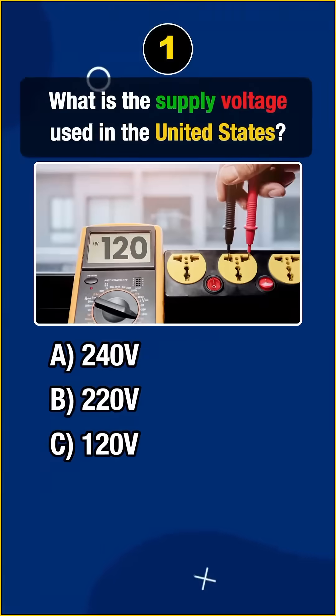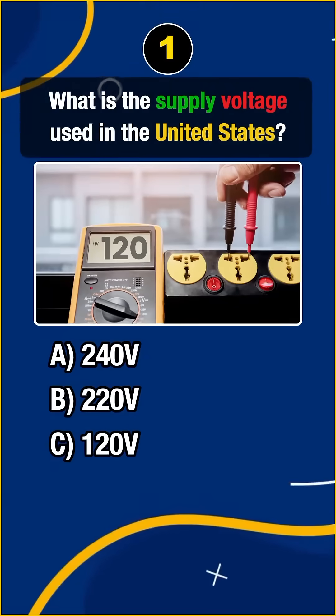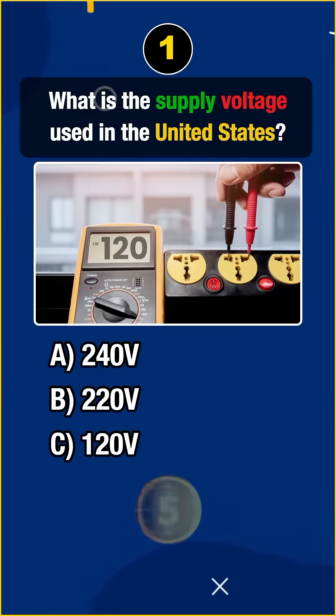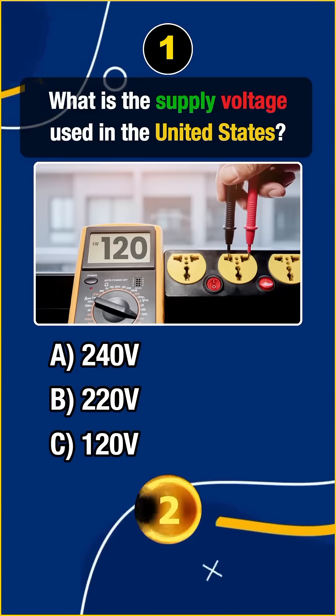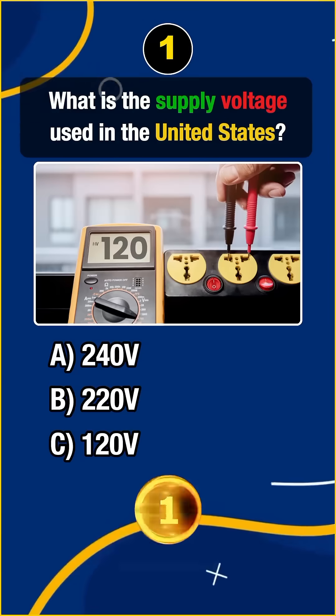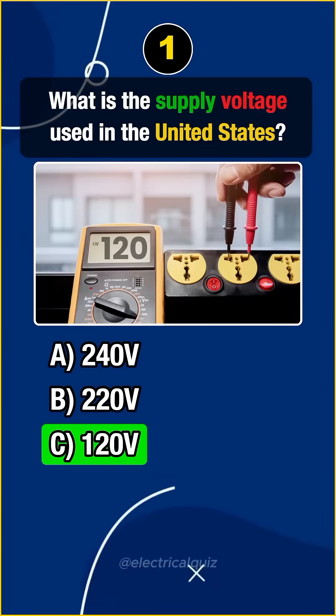First question. What is the supply voltage used in the United States? Answer C: 120 volts.